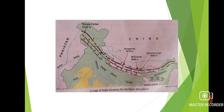These are the different landforms — underline them on page number 11: the Northern Mountains, the Northern Plains, the Thar Desert, the Peninsular Plateau, the Coastal Plains and the Islands. You can see them on the map.